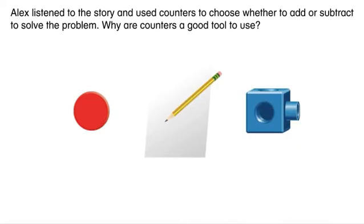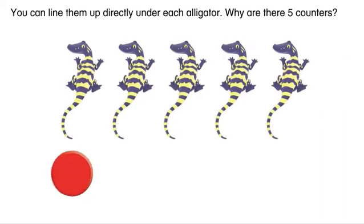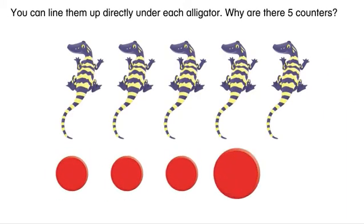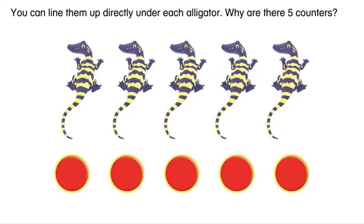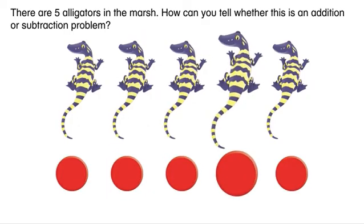Alex listened to the story and used counters to choose whether to add or subtract to solve the problem. Why are counters a good tool to use? You can line them up directly under each alligator. Why are there five counters? There are five alligators in the marsh.